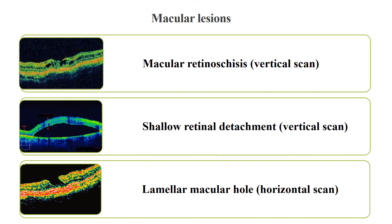In this case, there is macular retinoschisis with vertical scan, showing a rupture of the retinal layers within the inner part of the retina. On the other hand, there is a shallow retinal detachment with vertical scan, showing separation of the retinal layer from the retinal pigment epithelium without any structural continuity of the retina along the tomogram, indicating retinal detachment. The last image shows a lamellar macular hole, demonstrating total rupture of the inner and central part of the retina, resulting in a macular hole.